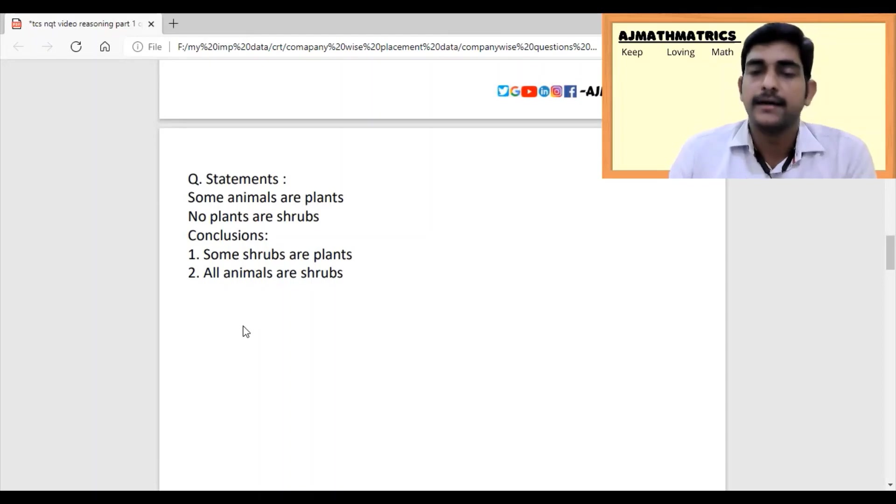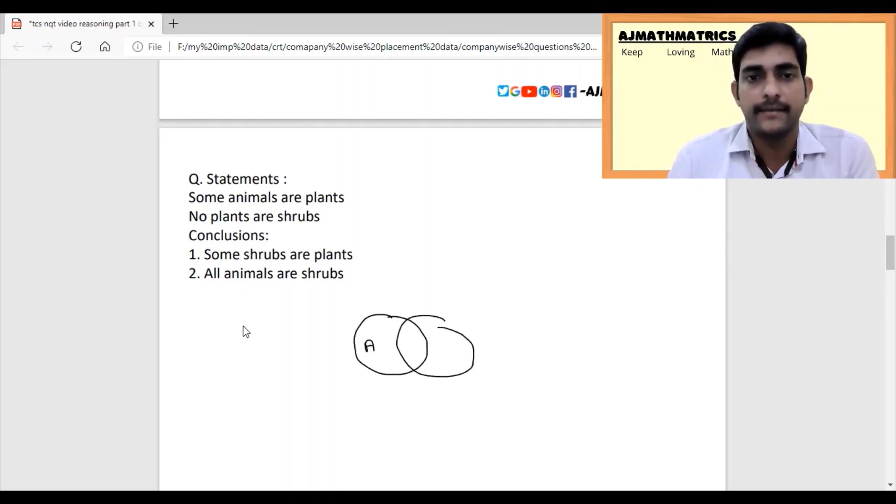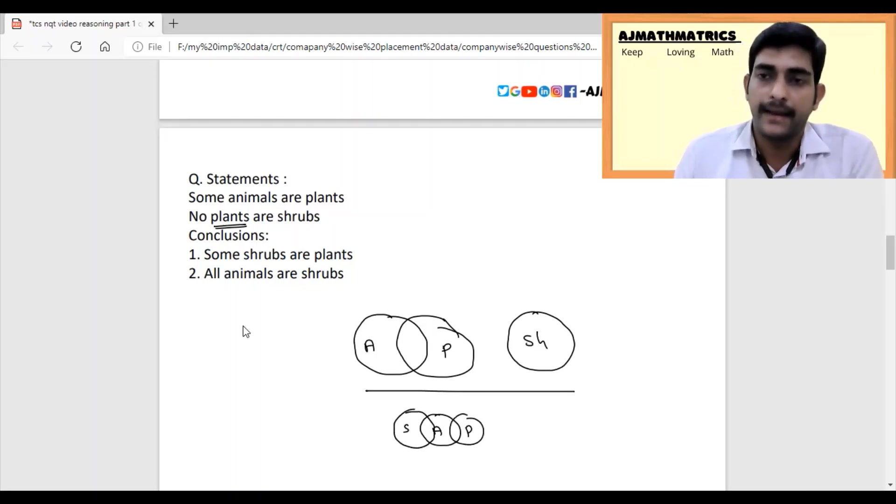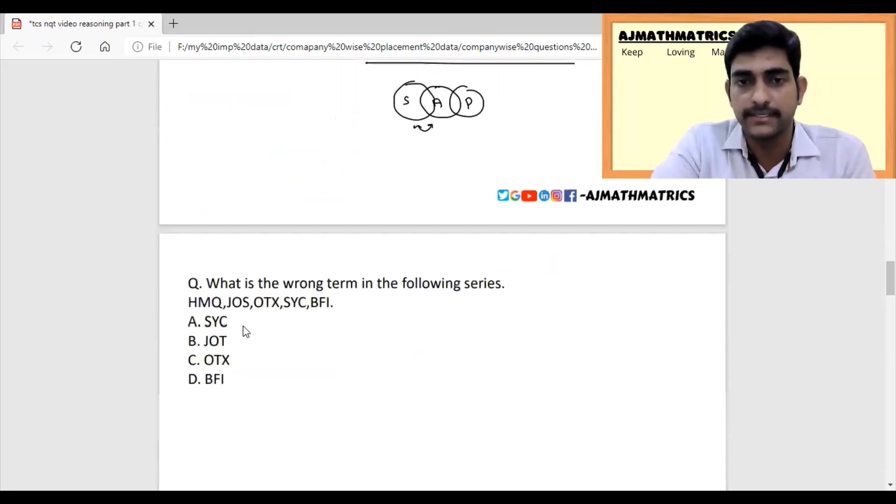This question comes under logical deduction. Let's use the Venn diagram method. Some animals are plants - so we draw overlapping circles for animals and plants. No plant is a shrub - so plants and shrubs are separate. Statement 1 says some shrubs are plants, but we have no plant is shrub, so this definitely does not follow. Statement 2 says all animals are shrubs - definitely not, we can maximum say some animals are shrubs. So both statements do not follow.